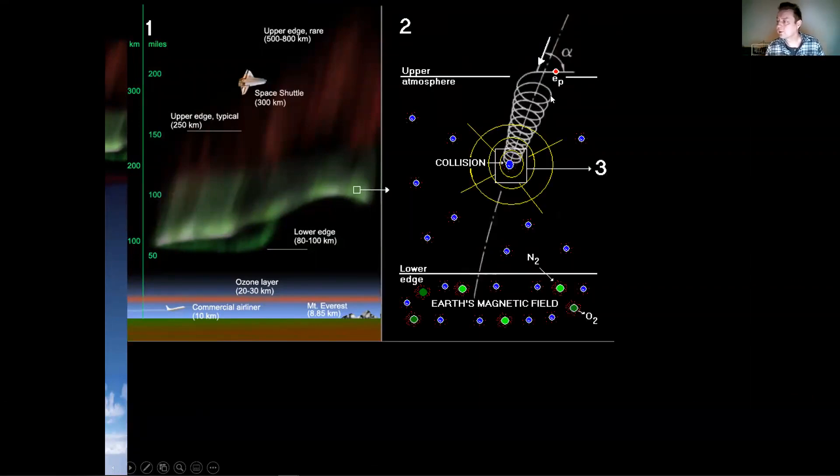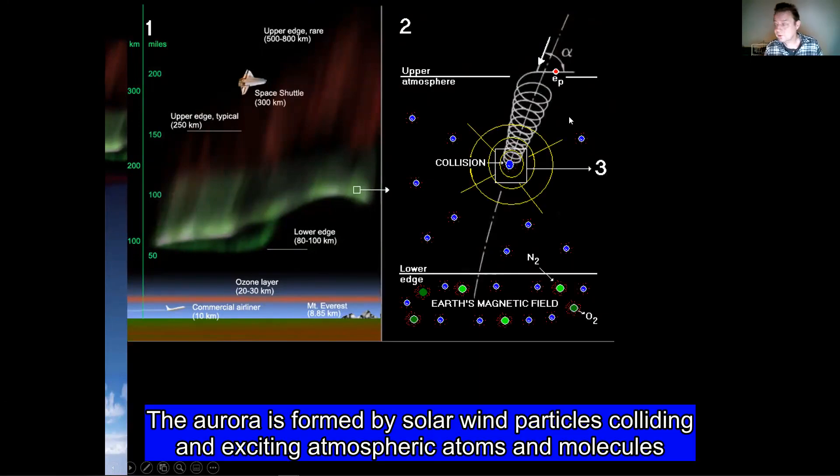Well, the solar electrons or protons, here I marked it as the primary electron, will, as it's guided by the magnetic field of the Earth, collide with the atmosphere upper atoms.